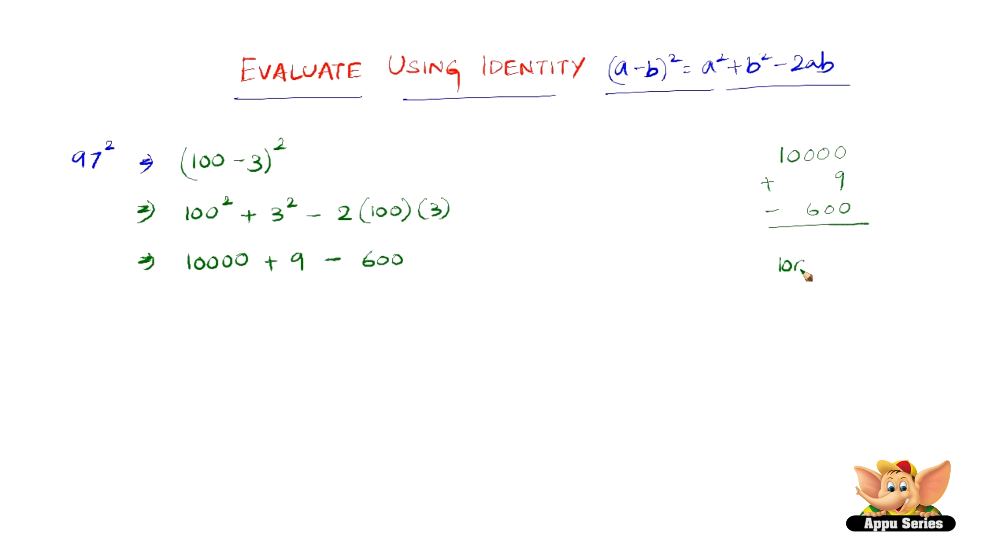10,000 + 9 is 10,009. Now 10,009 - 600: 9 - 0 is 9, and we borrow 1 from 10, so 10 - 6 is 4, and 9 - 0 is 9. So we have 9,409 as the value of 97².